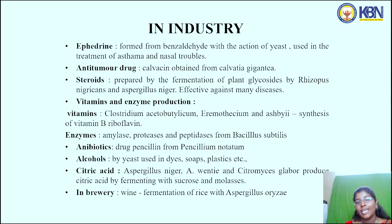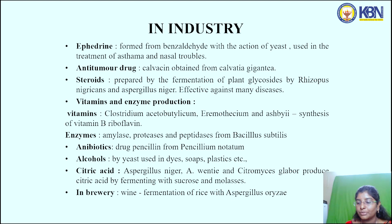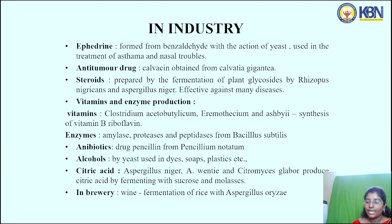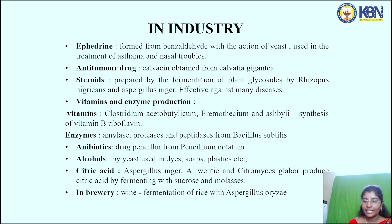In industry: Ephedrine is formed when benzaldehyde is added with yeast, and it is used in the treatment of asthma and nasal troubles. The antitumor drug Calvacin is obtained from Calvatea gigantea. Steroids are prepared by the fermentation of plant glycosides by Rhizopus nigricans and Aspergillus niger, which are effective against many diseases.